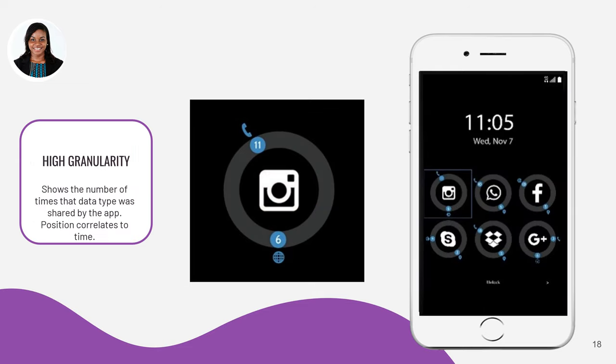Next, we have a design that is app-centric with high granularity. Compared to the previous designs, low and moderate, this design shows which app is sharing what data type and when. The position here correlates to the relative time that data sharing would have last happened.